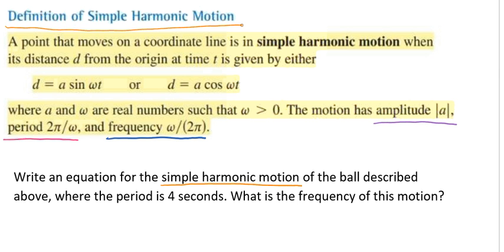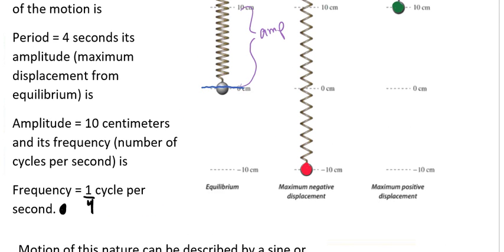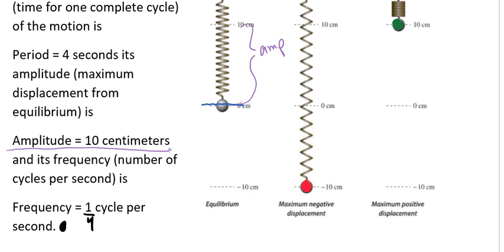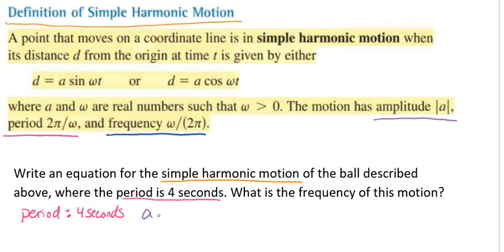So we're going to begin by looking at what information we had. So we know that our period is four seconds, because that's what we were given up above. In our diagram, we could see that the ball had an amplitude of 10 centimeters. So we'll say that a equals 10. So therefore our amplitude is the absolute value of a, which in this case is going to be 10. We know that d is going to equal 0 when our time is at 0. So the displacement will be at 0, meaning it will be at the equilibrium when our t equals 0.